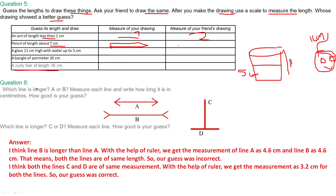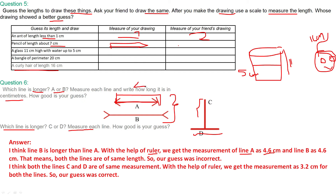Question number 6: Which line is longer, A or B? Measure each line and write how long it is in centimetres. First guess, then measure. I think line B is longer than line A — by looking, we can guess B is greater than A. Using a ruler, the length of line A is 4.6 centimetre, and line B is also 4.6 centimetre. That means both lines are the same length, so our guess was incorrect.